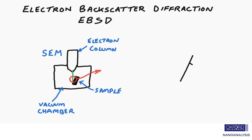We are looking at a crystalline material here, and if it is polycrystalline, it is made up of grains with different crystal orientations, as indicated by the gray lines.